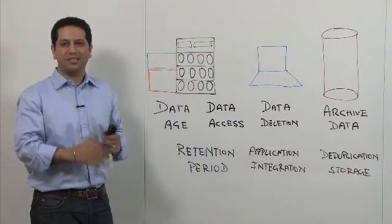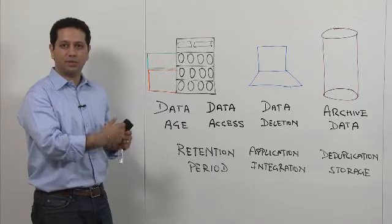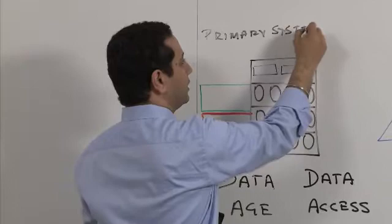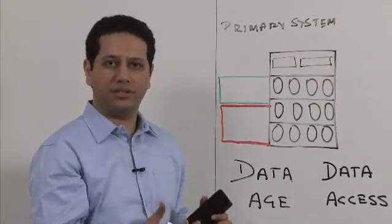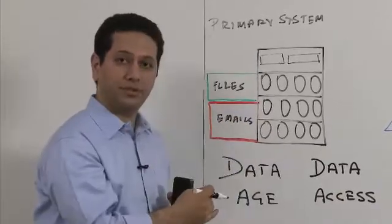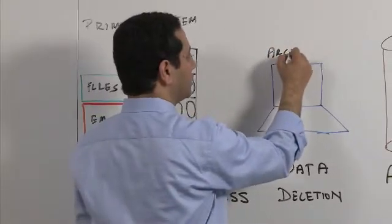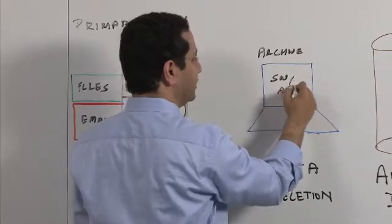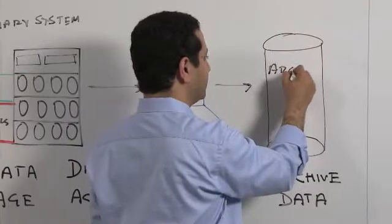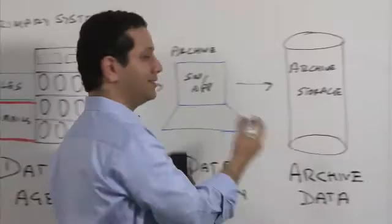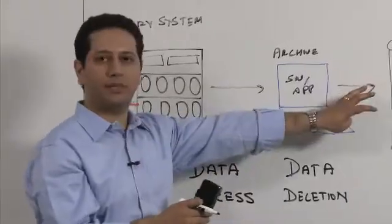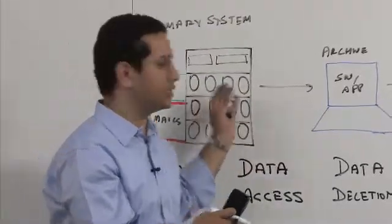Before I present Data Domain Retention Lock software, let's look at a typical archiving environment and the typical secure retention policies and processes done today in the industry. In your environment you have primary storage systems which house your highly transactional applications like Microsoft Exchange, file shares, or SharePoint data. Based on the archiving policies configured on your archive software, the archive application takes data from your primary storage system as it meets your policies and writes that data to a backend archive storage. The data sits on the primary storage system where it belongs given its highly transactional nature, and as it ages or meets your policies, it is written to an archive storage.